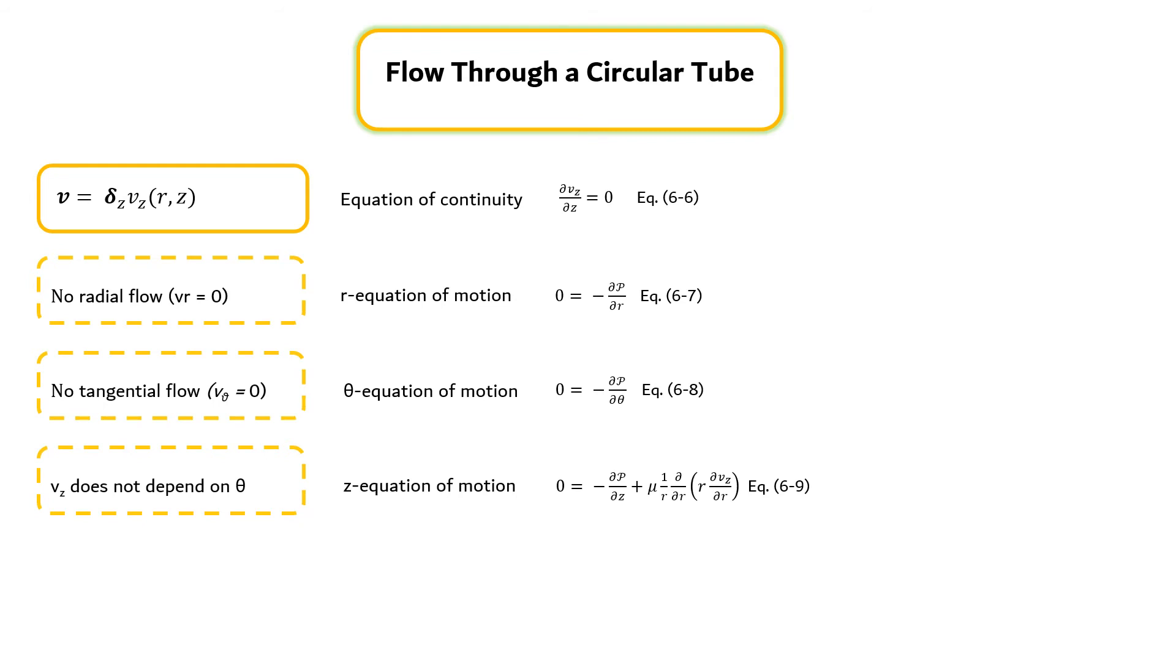Hence, the partial derivatives in the second term on the right side of equation 6-9 can be replaced by ordinary derivatives. By using modified pressure P equals p plus rho g h, where h is the height above some arbitrary datum plane, we avoid the necessity of calculating the components of g in cylindrical coordinates, and we obtain a solution valid for any orientation of the axis of the tube. Equations 6-7 and 6-8 show that P is a function of z alone, and the partial derivative in the first term of equation 6-9 may be replaced by an ordinary derivative.